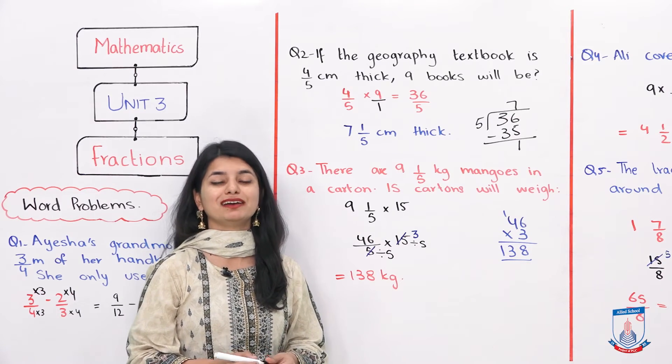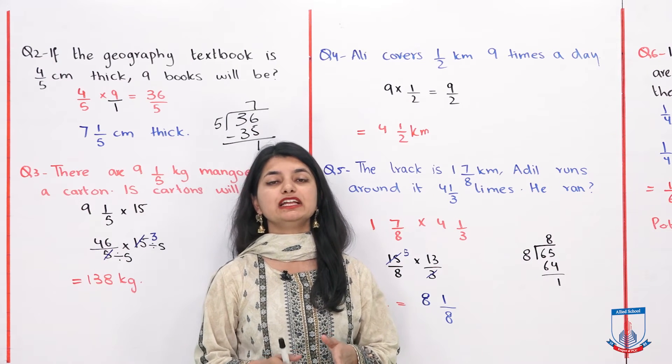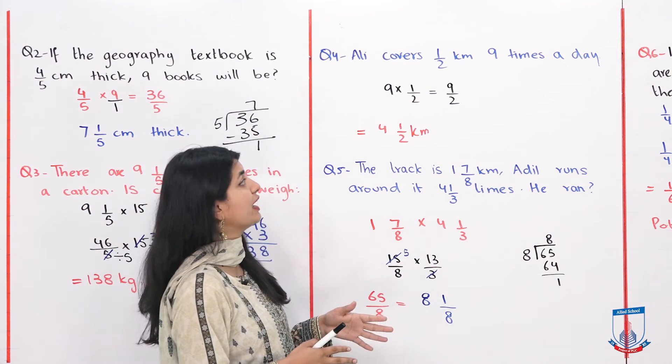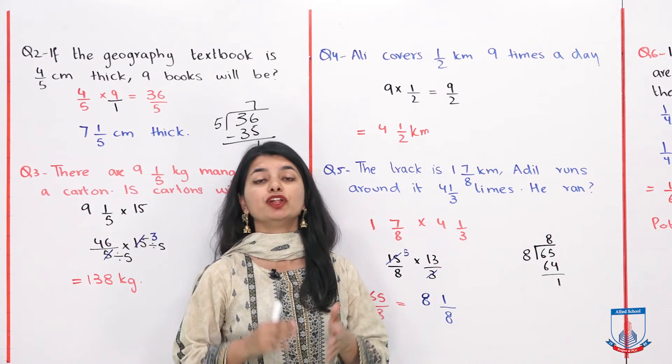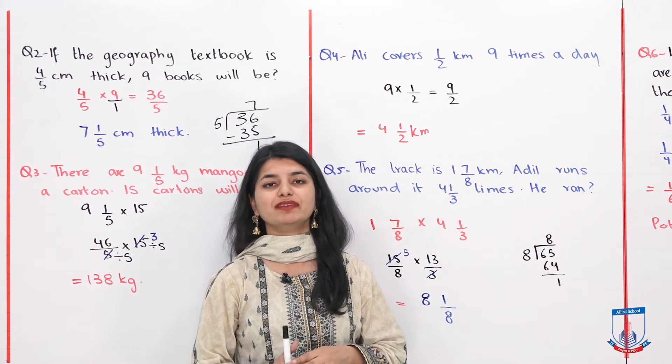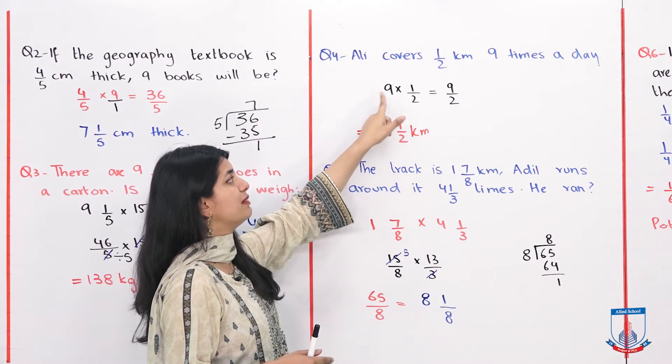Now let's see our next question. Question number 4 is that Ali runs in a park. He covers 1 over 2 kilometers, 9 times. So the total distance covered in the day is? 1 over 2 times 9. We have to multiply 1 over 2 by 9.